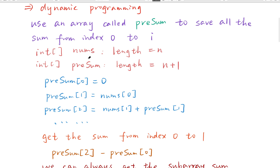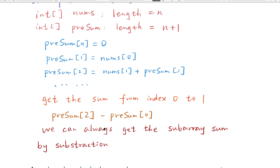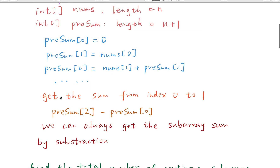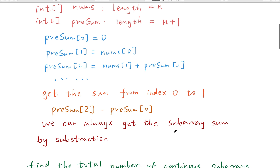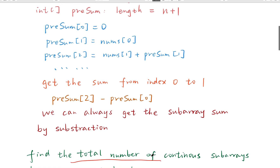Usually, if the given array named numbers has a length of n, the prefix sum array has a length of n plus 1. The prefix sum at index 0 is just 0, prefix sum at index 1 equals numbers[0], and prefix sum at index 2 equals numbers[1] plus prefix sum[1], and so on. If we want to get the sum from index 0 to 1, we can use prefix sum[2] minus prefix sum[0]. This is general — even for subarrays starting from index 0 we can use subtraction.